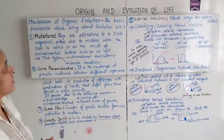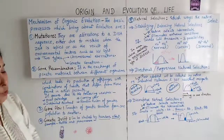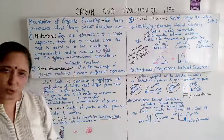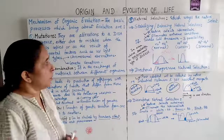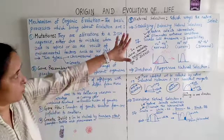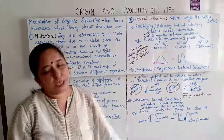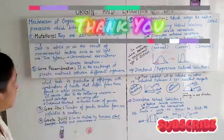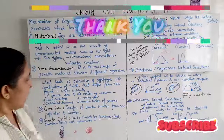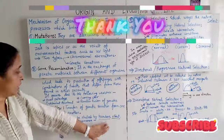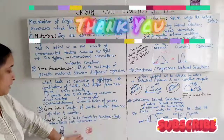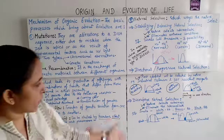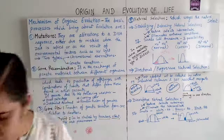These are the processes that bring about evolution. Natural selection and its types are very important, as are the founder's effect and bottleneck phenomenon. Please go through these carefully.